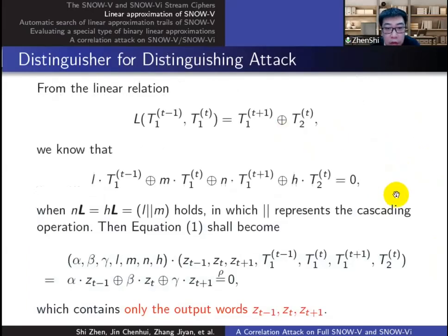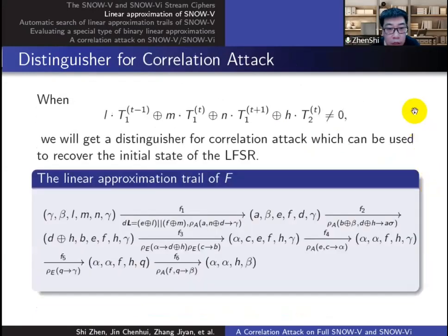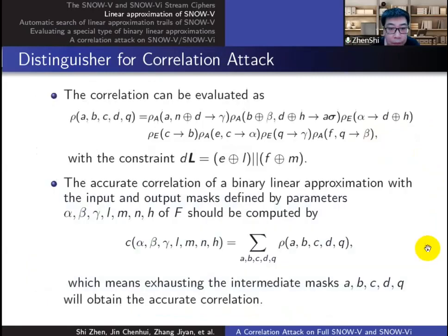If this equation holds, we will get a linear approximation equation containing only the output words, namely a distinguisher for distinguishing attack. When the equation does not work, we shall get a distinguisher for correlation attack. The linear approximation process is shown here and we can search for linear trails containing it. The correlation of a linear trail can be calculated by this formula and get the accurate correlation of an approximation by summing up all the correlations of the trails containing it.